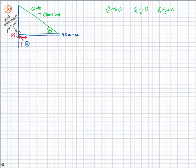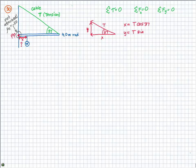Think about the trigonometry at the point where the cable meets the rod. The tension is pulling up and to the side — over and up — so we have an X component and a Y component of the tension. With an angle of 37 degrees, the X component of tension equals T cosine 37 and the Y component of tension equals T sine 37.